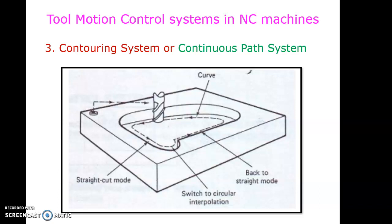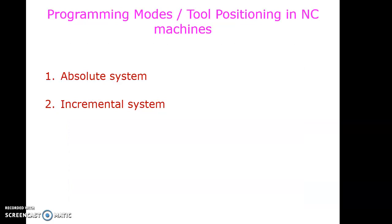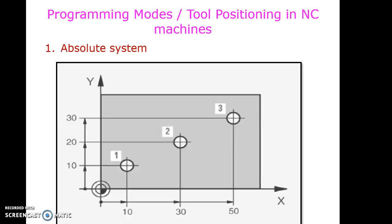Next are programming modes, or tool positioning in NC machines. When developing a part program, we need a reference point, and based on that reference point we develop such programs. Based on the reference point, we can use two systems: one is the absolute system and the second is the incremental system.